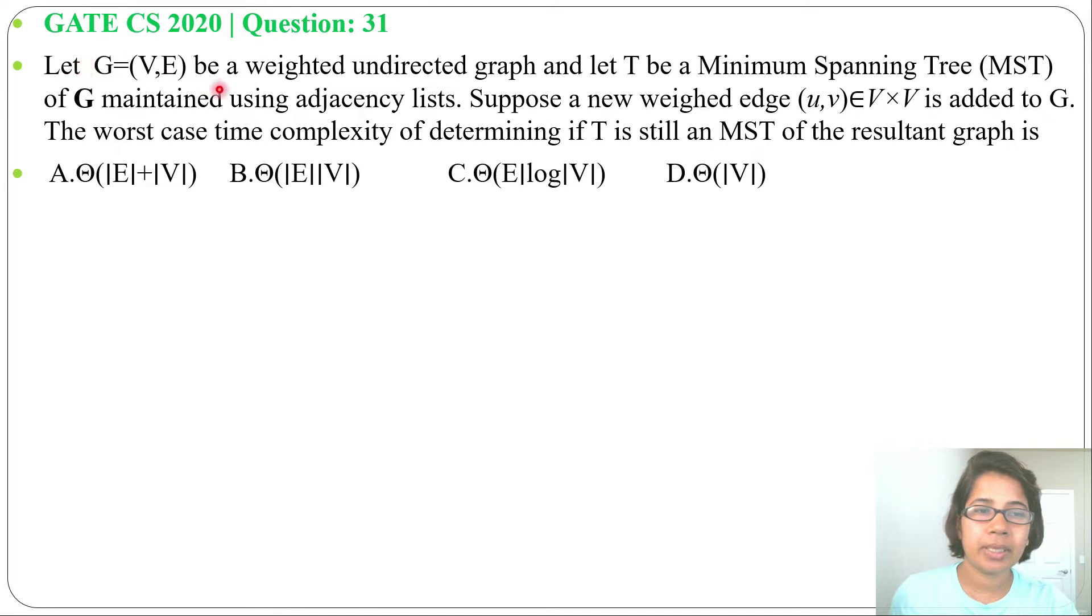Let G equals V, E be a weighted undirected graph and let T be a minimum spanning tree of G maintained using adjacency lists. Suppose a new weighted edge H belongs to V cross V is added to G. The worst case time complexity of determining if T is still an MST of the resultant graph is what the options are given.